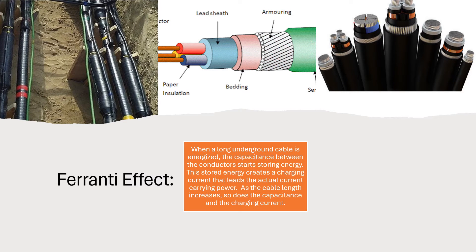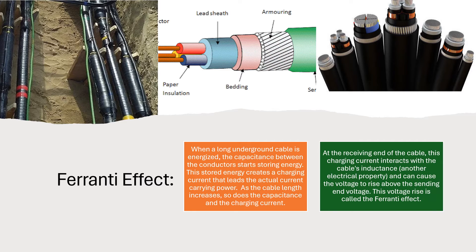Ferranti effect. When a long underground cable is energized, the capacitance between the conductors starts storing energy. This stored energy creates a charging current that leads the actual current carrying power. As the cable length increases, so does the capacitance and the charging current. At the receiving end of the cable, this charging current interacts with the cable's inductance and can cause the voltage to rise above the sending end voltage. This voltage rise is called the Ferranti effect.